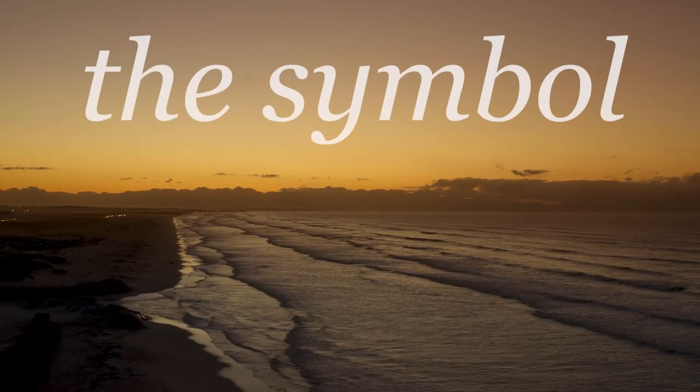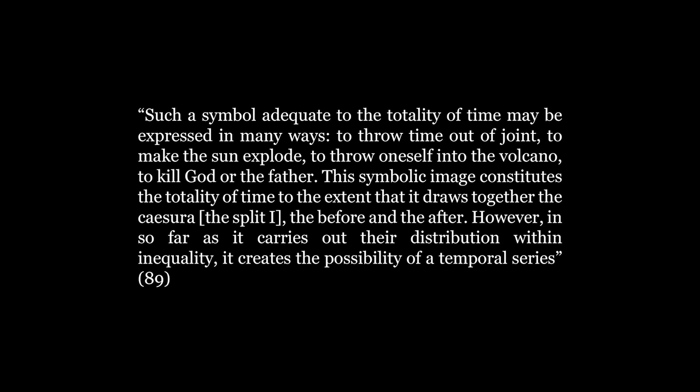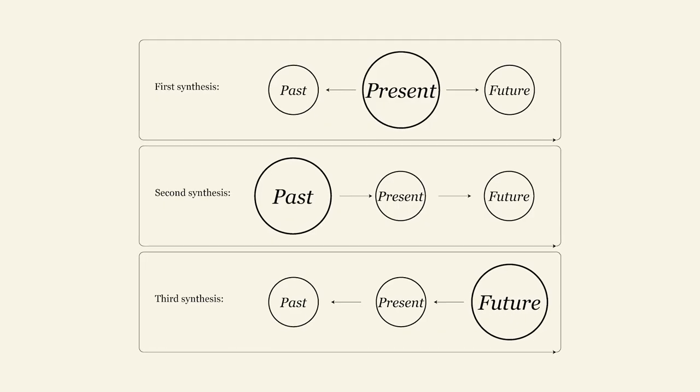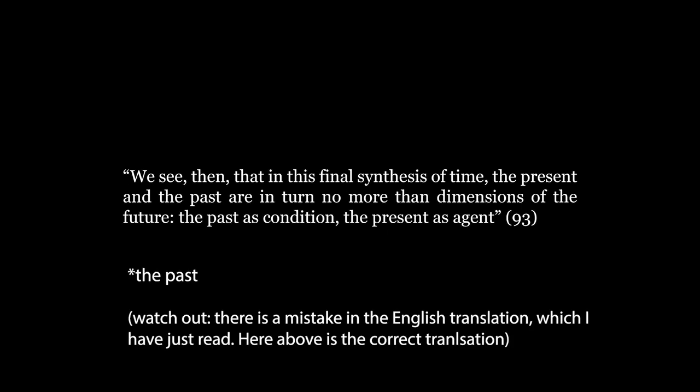Time now acquires a determination which Deleuze calls a symbol, which repairs the split I, and makes time an ensemble and a collection of series. Such a symbol adequate to the totality of time may be expressed in many ways. To throw time out of joint, to make the sun explode, to throw oneself into the volcano, to kill god or the father. This symbolic image constitutes the totality of time to the extent that it draws together the caesura, the split I, the before and the after. However, insofar as it carries out their distribution within inequality, it creates the possibility of a temporal series. What Deleuze is saying here is that in the third synthesis, the aspect of time, which becomes central, is the future. At this point I have forgotten the pure past, and I am getting ready for action. As Deleuze explains, we see then that in this final synthesis of time, the present and future are in turn no more than dimensions of the future. The past has condition, the present has agent. It is here that finality occurs, that is, I become able to act towards a goal.